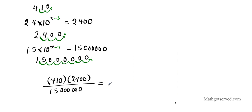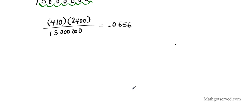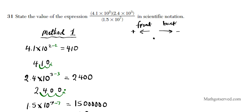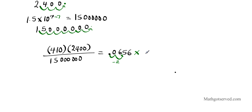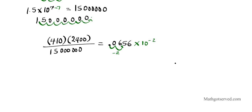So the result is 0.0656. Now I need to express this in scientific notation, which requires only one digit in front of the decimal place. I have to move the decimal point forward two places, which is equivalent to multiplying by 10 to the negative 2. So 0.0656 equals 6.56 times 10 to the negative 2.